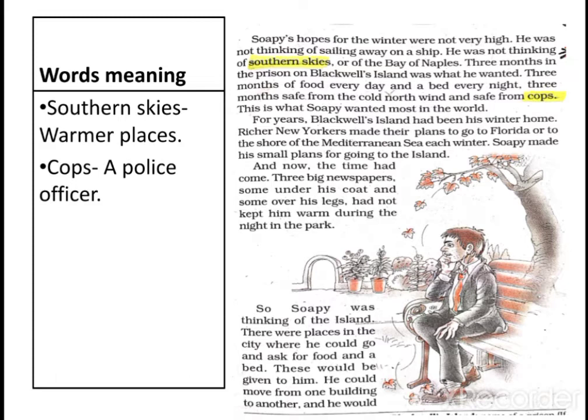All those signals of approaching winter made him fearful. He had a desire for shelter during the winter period. He chose Blackwell's Island prison instead of other places like the southern skies or Bay of Naples. 'Southern skies' means warmer places, and 'cops' means a police officer. For years Blackwell's Island had been his winter home. Richer New Yorkers made their plans to go to Florida or to the shore of the Mediterranean Sea each winter, while Soapy made his small plan for going to the island.